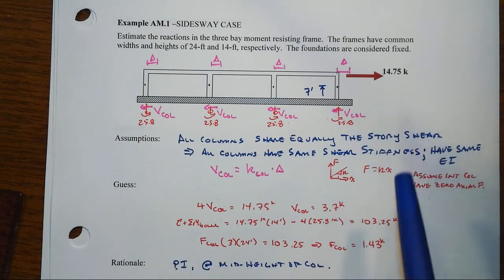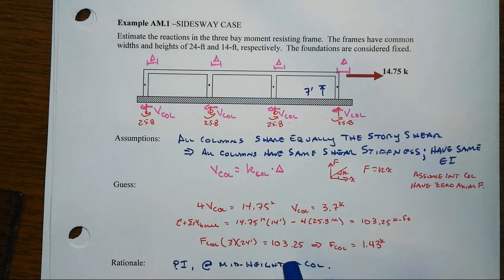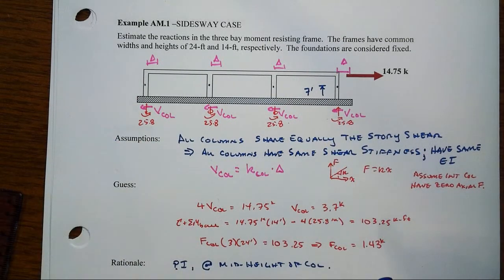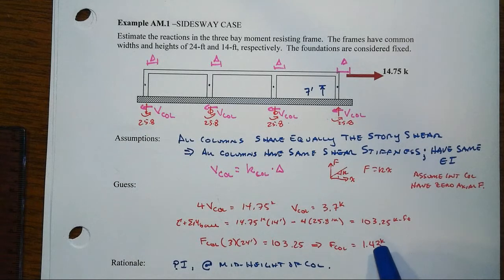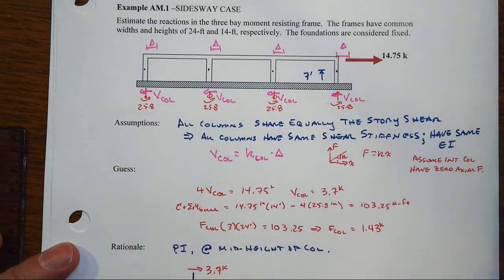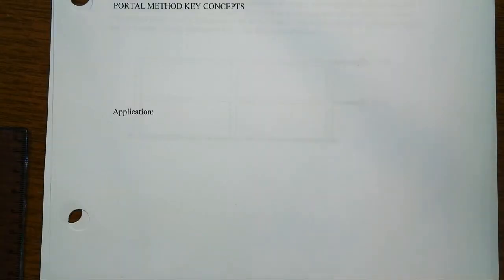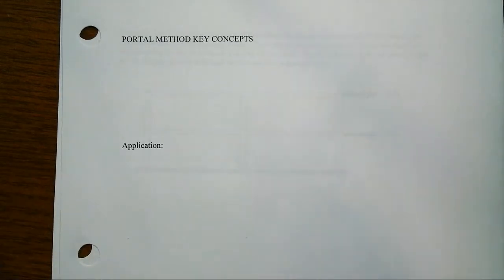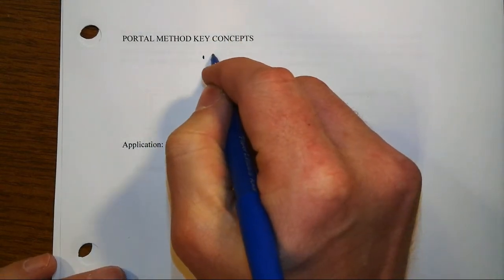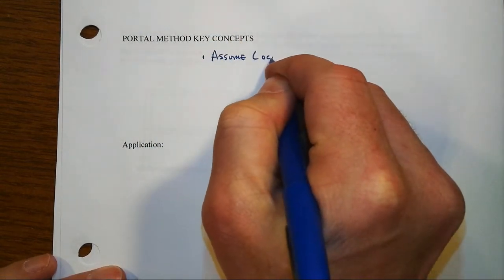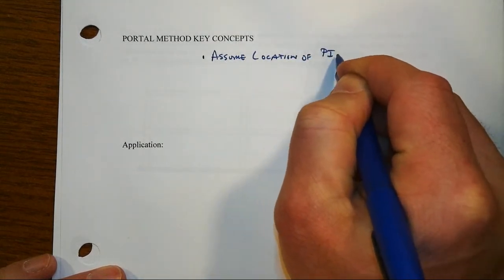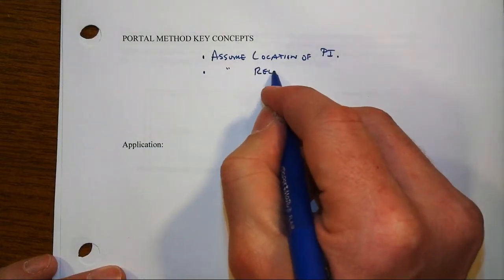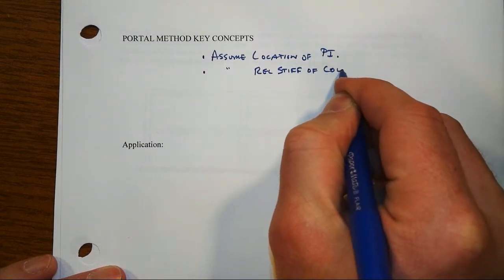We made a final assumption about what happens with the net overturning moment, and we still need to resist the overturning effect of this 14.75 kips. That led us to making an assumption that maybe the axial forces in the middle columns were nothing, and the outer ones would take up whatever the net left over was. Now what we're going to do is improve the accuracy of our approximate method through what we call the portal method. The key concept here is to make some assumption about the location of points of inflection.